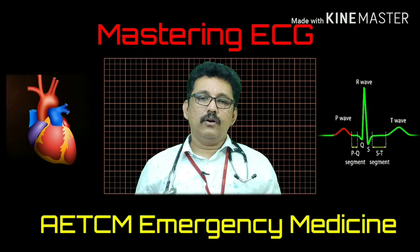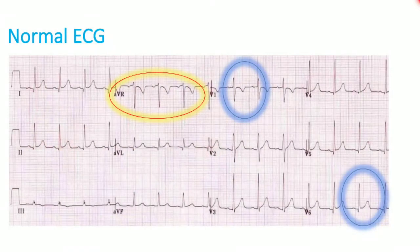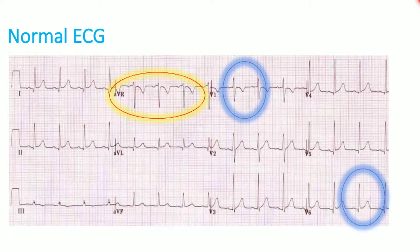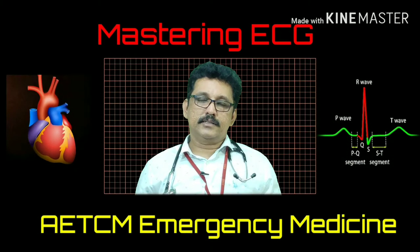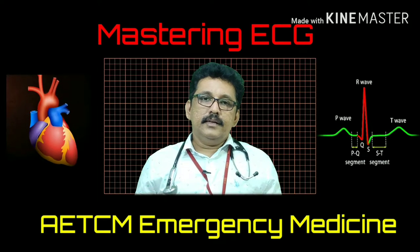On a normal ECG, aVR complexes are all negative because the current goes away from the vector. In leads II, III, aVF, I, and aVL the QRS complex is positive. In V1 you see a small R wave and a deep S wave due to current flow. In V6 there is a small Q wave and a large R wave.